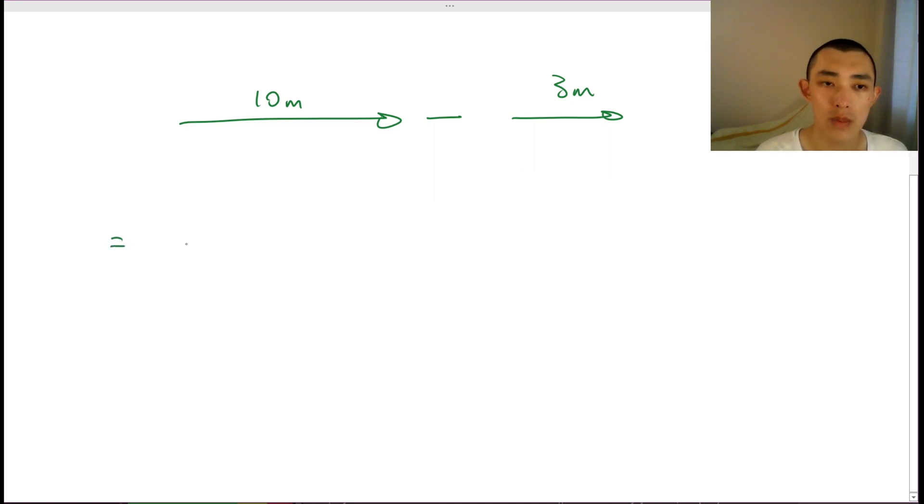So what we do is we say that this is 10 meters towards the right. Now before we actually go into the math, let's intuitively understand what this means. This is saying if I go 10 meters towards the right, but actually 3 less meters towards the right. So intuitively, we can see that the answer is 7 meters towards the right.